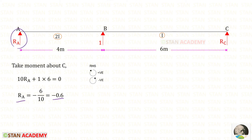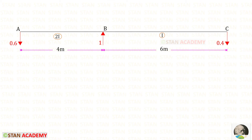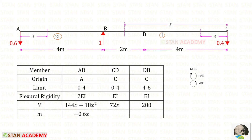So we change the direction of Ra. Applying this rule we find Rc, for which we also get a negative value, meaning the assumed direction is incorrect — so we change the direction of Rc as well. Now let us find small moment m in section AB: Ra acts anticlockwise so it is negative, with distance x.